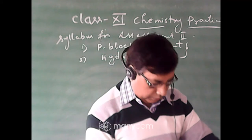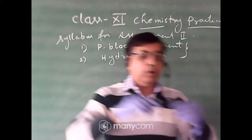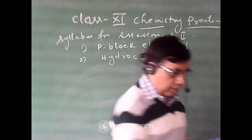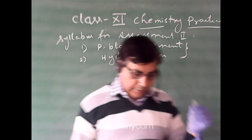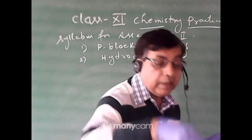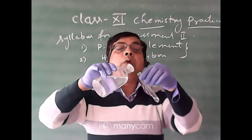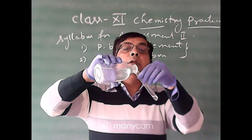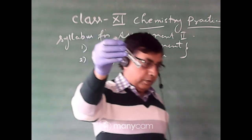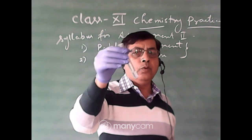Wash the test tube thoroughly. Take a small amount of solid sample again. For the sulfate test, you add barium chloride solution. Here also no precipitate is formed, meaning the given salt does not contain sulfate ion, chloride ion, bromide ion, and so on.